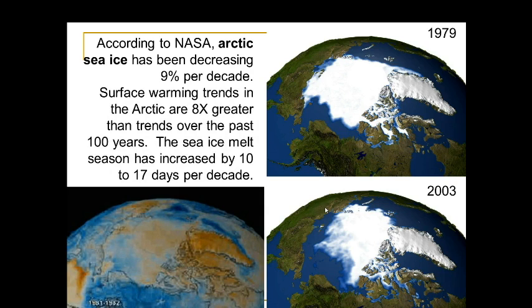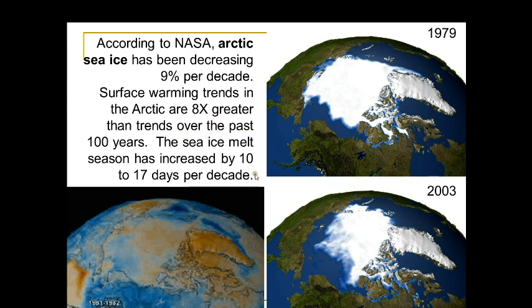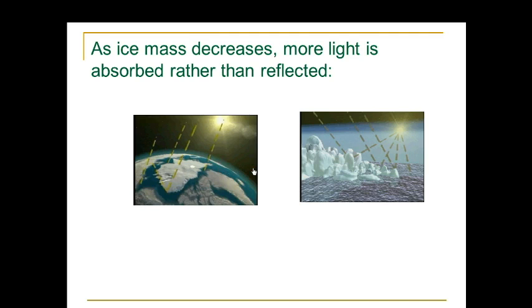Surface warming trends in the Arctic are eight times greater than trends over the past 100 years. The season for sea ice melt — the number of days that sea ice actually melts — has increased by 10 to 17 days per decade. As ice mass decreases, more light is absorbed than reflected, which causes even more warming because the energy is trapped rather than reflected out of the atmosphere.